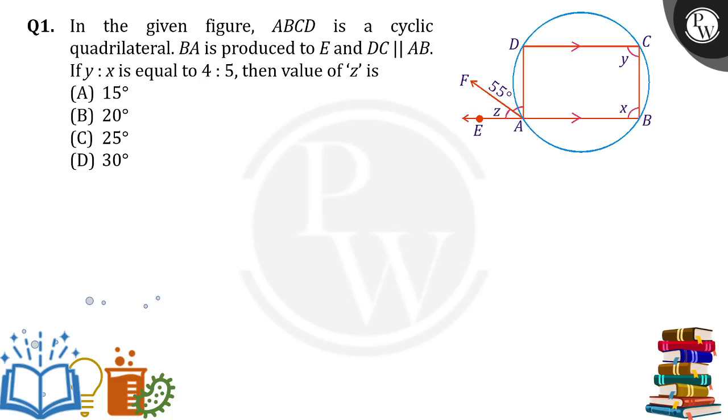Hello everyone. The given figure ABCD is a cyclic quadrilateral. BA is produced and DC is parallel to AB. If Y:X is equal to 4:5, then what is the value of Z?